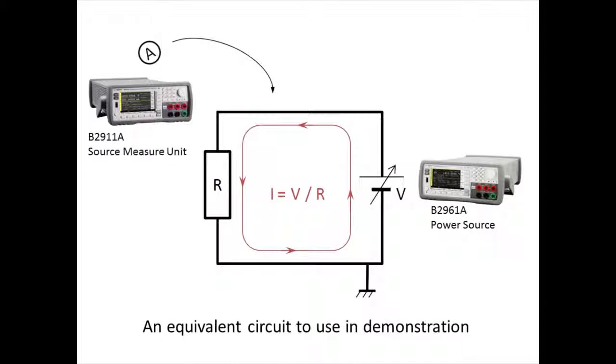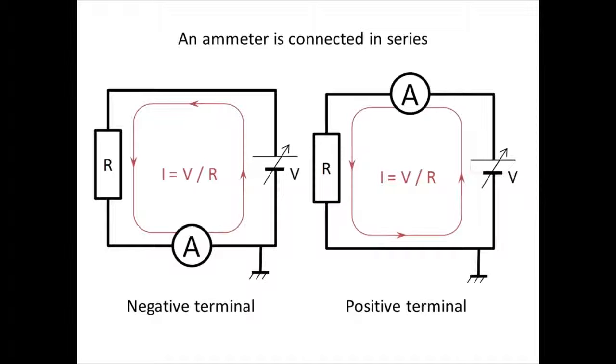This is an equivalent circuit to use in this demonstration. This circuit consists of a DC voltage source and resistance. An ammeter is connected in series. If the ammeter is ideal, you can connect the ammeter to either positive or negative terminal of the voltage source.